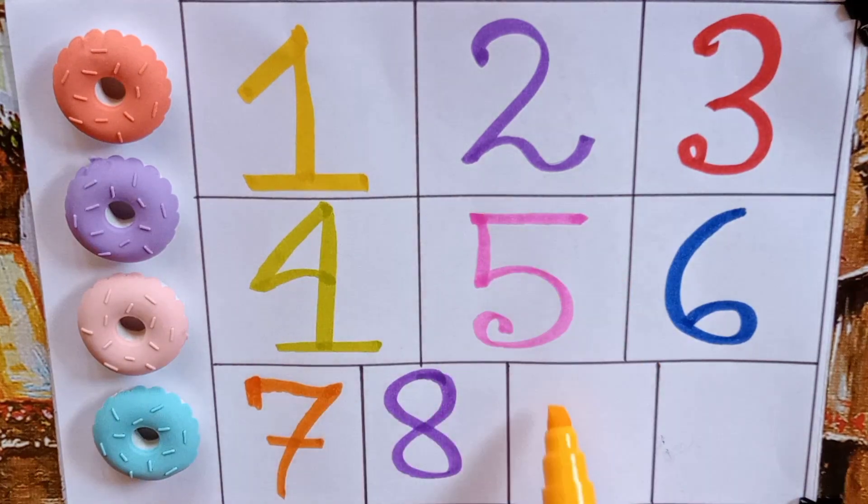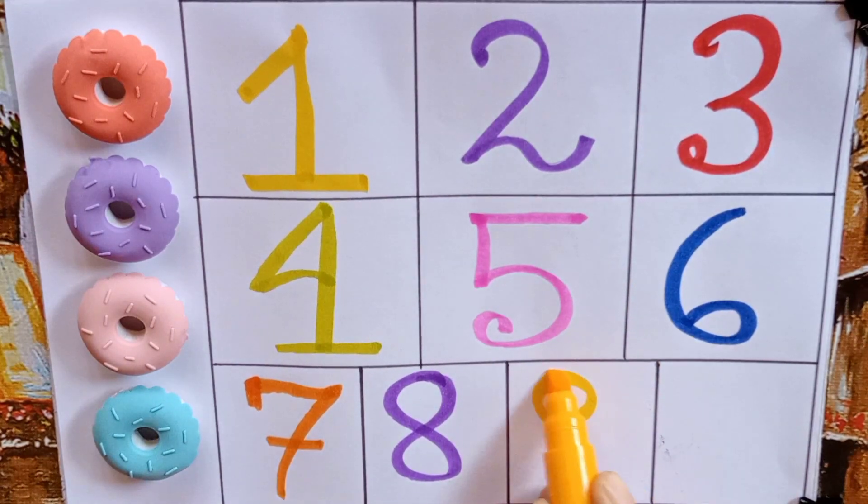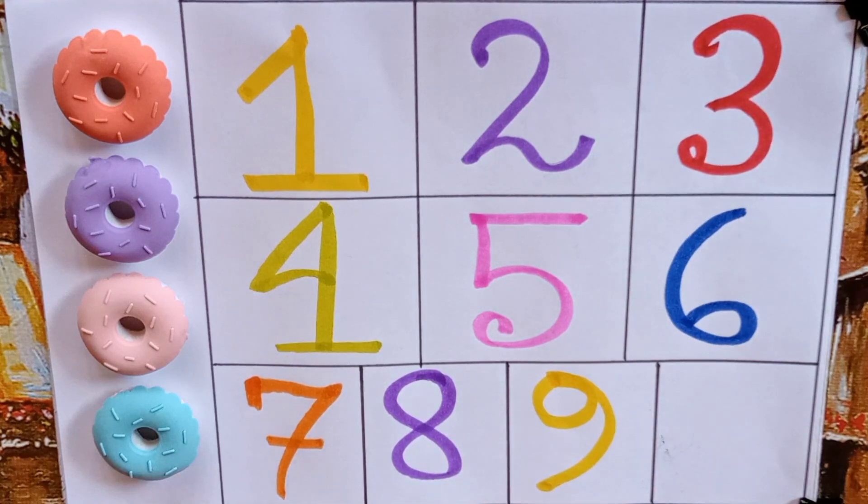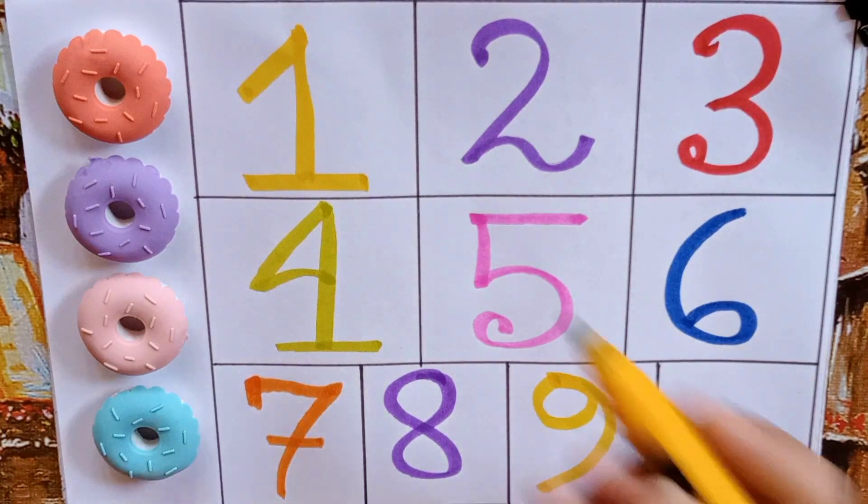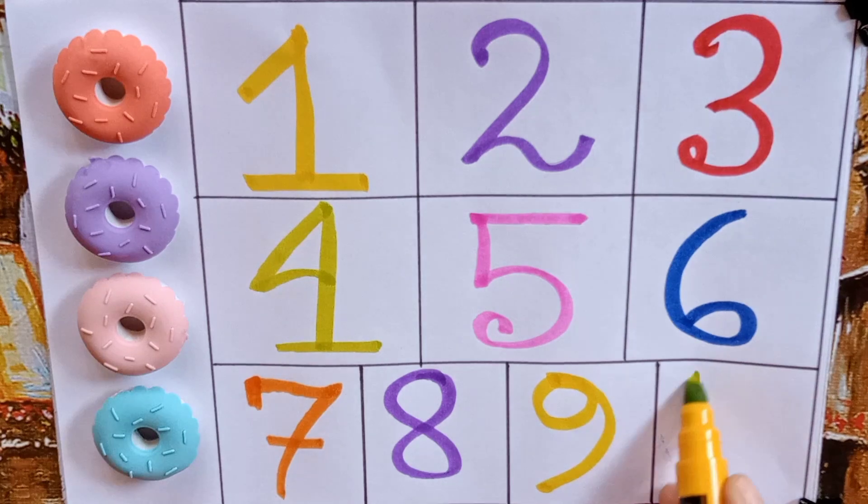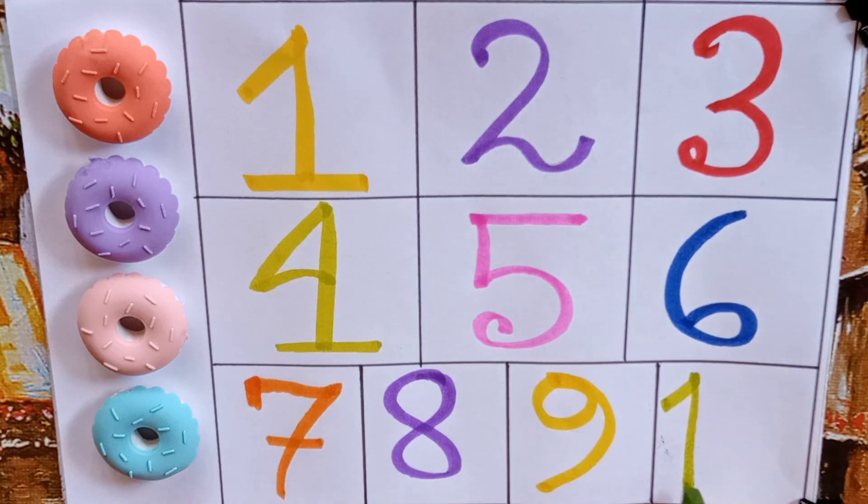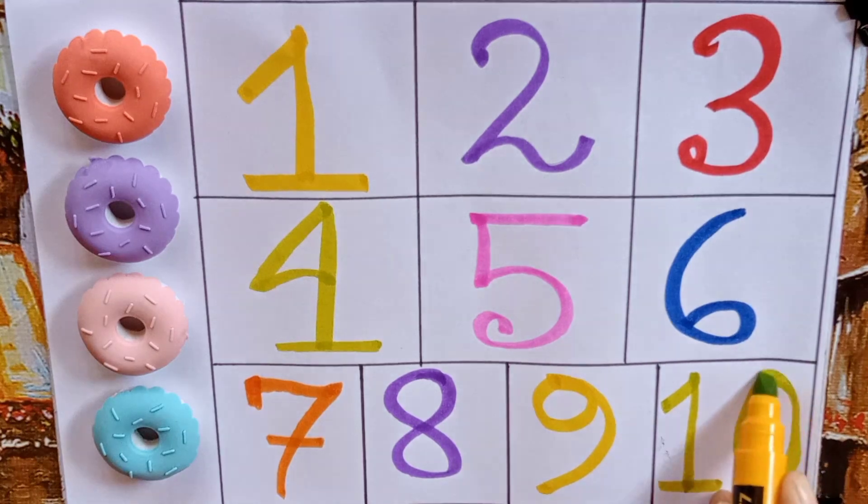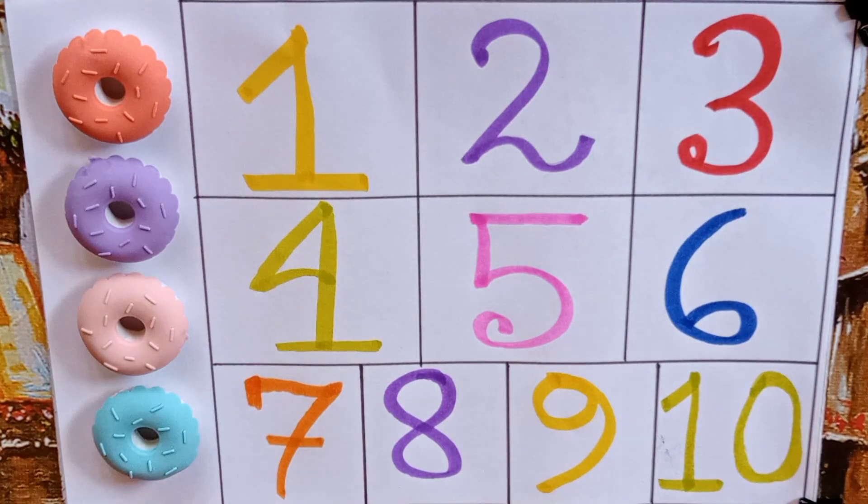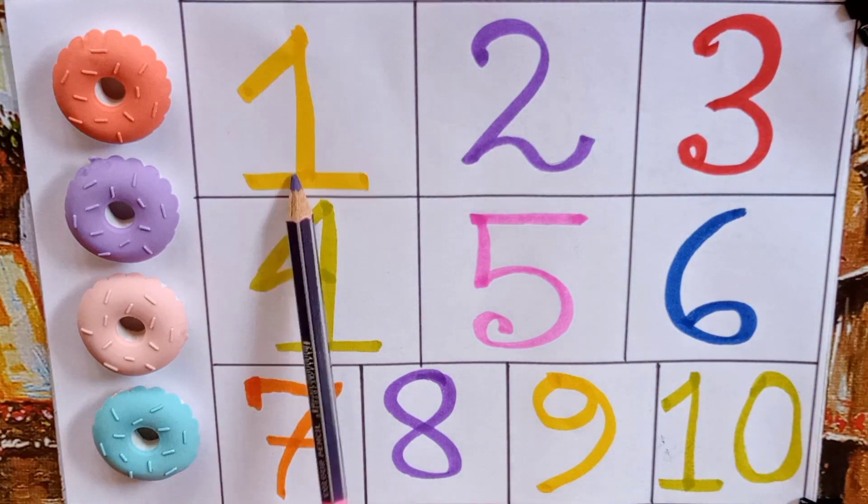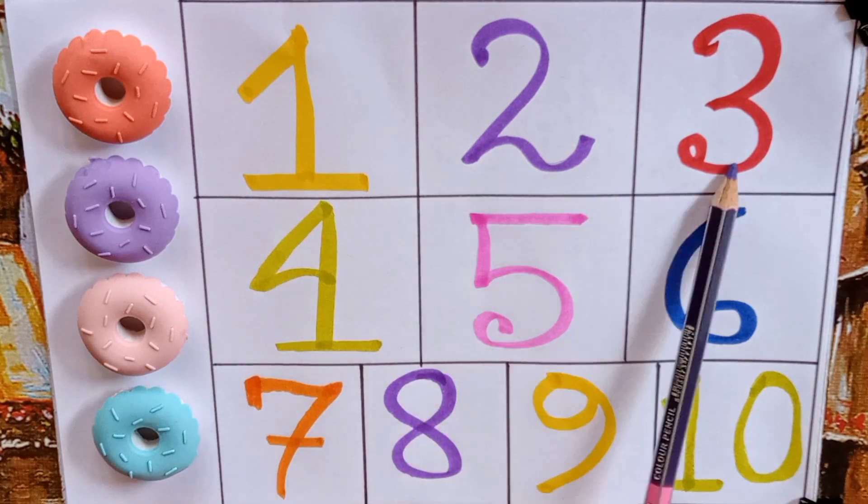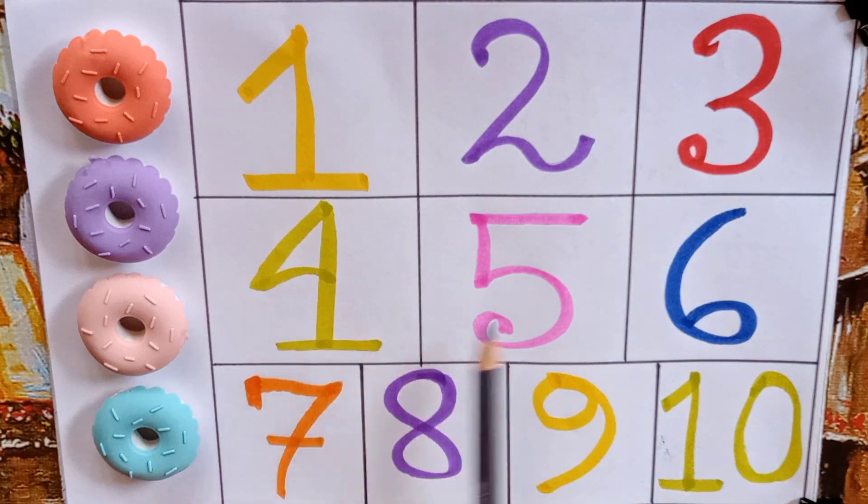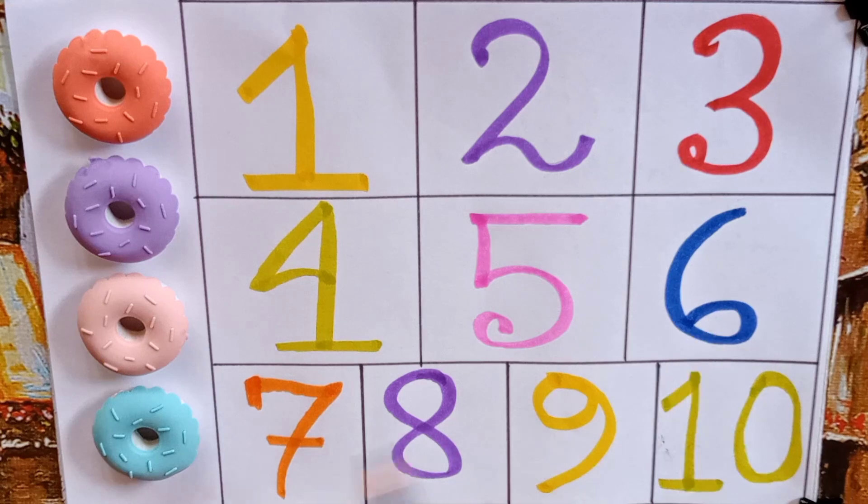Yellow, nine, N-I-N-E, nine. Green, ten, one-zero, ten. Now stay with me kids: one, two, three, four, five, six, seven, eight, nine, ten. Bye-bye kids, keep learning.